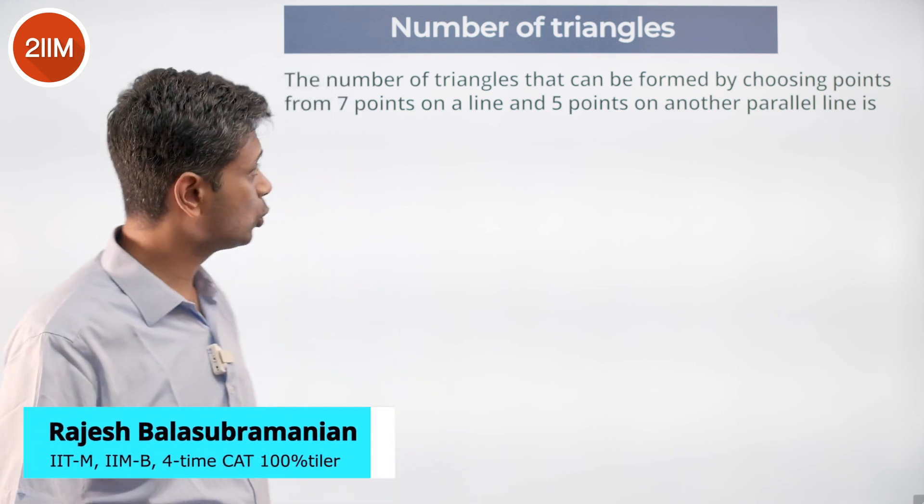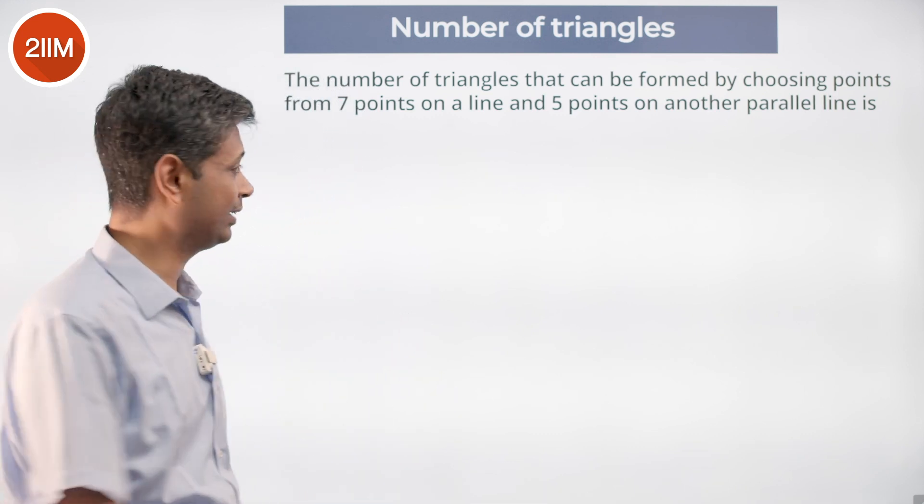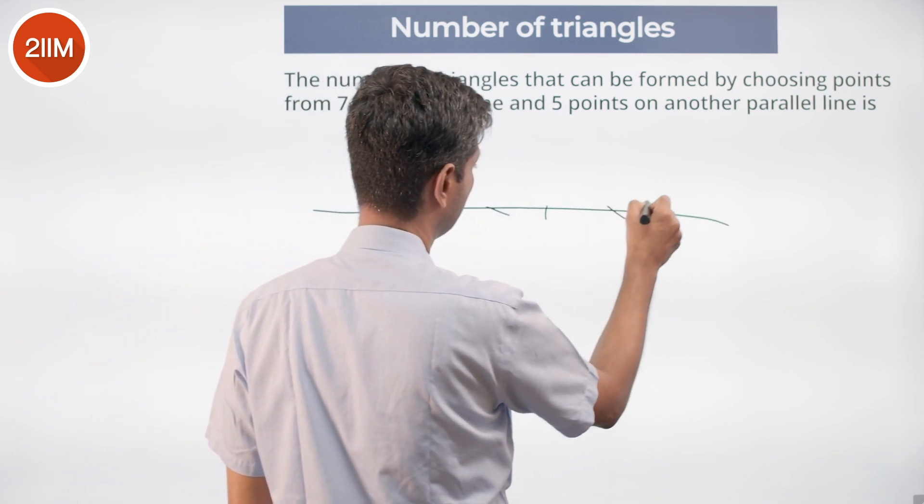The number of triangles that can be formed by choosing points from seven points on a line and five points on another parallel line. Seven points on this line: one, two, three, four, five, six, seven.